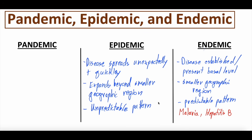Examples of epidemics include Ebola, which has caused multiple epidemics in the past spreading very quickly; malaria, which has caused epidemics though it's typically mostly endemic; and Zika virus, which caused an epidemic a few years ago. A non-infectious disease example of an epidemic would be obesity in the U.S.A. — it started to spread rapidly, expanded into a larger geographic region, and was somewhat unpredictable, although we're starting to get a better grasp on it. All of these are epidemics.